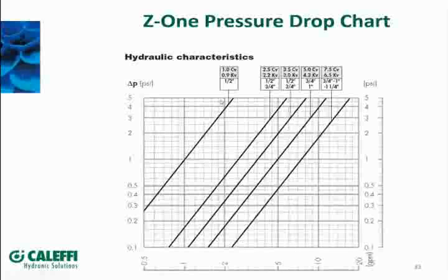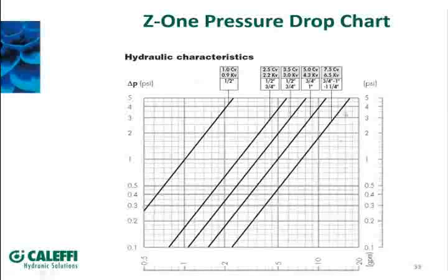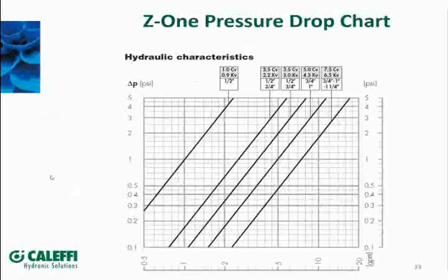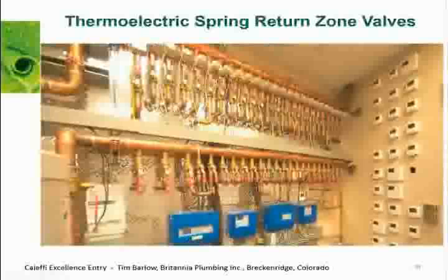This graph shows our Z1 valve at different CV ratings and the characteristics of each. Let's say we're going to flow two gallons per minute through a valve. Come to two GPM on the bottom and run up the line — you can see that with a smaller CV of one, the pressure drop at two-gallon flow is up around four PSI. Whereas with the five CV valve, come down at two GPM and you can see how low the pressure drop is. That chart helps you decide what the application is and which valve is best for the job.